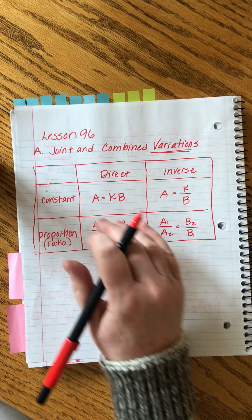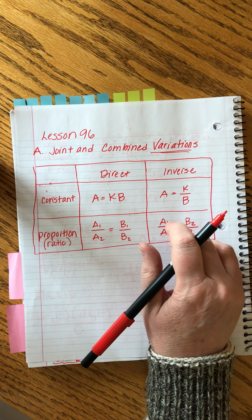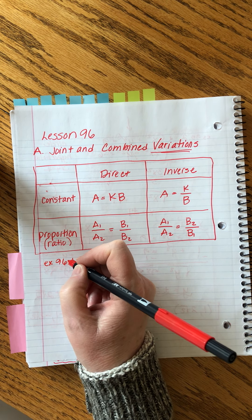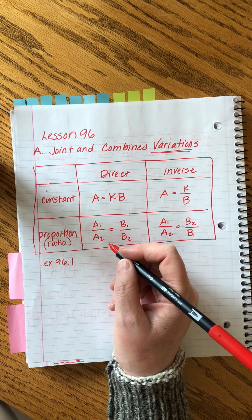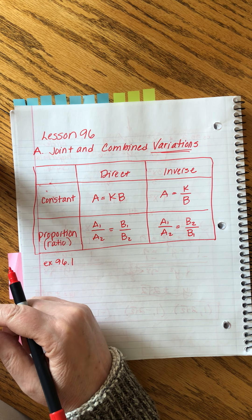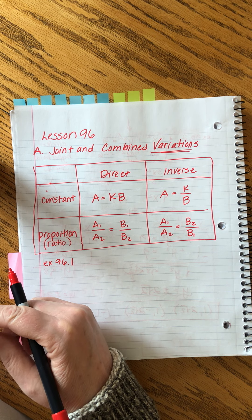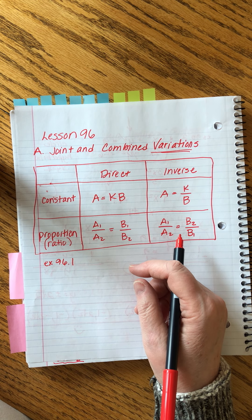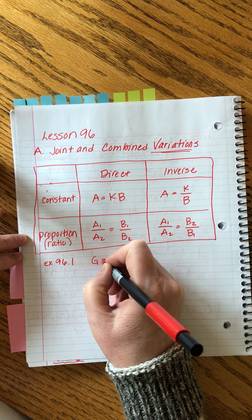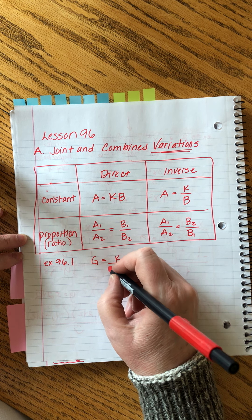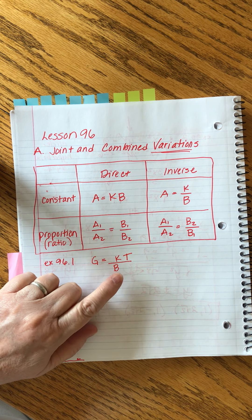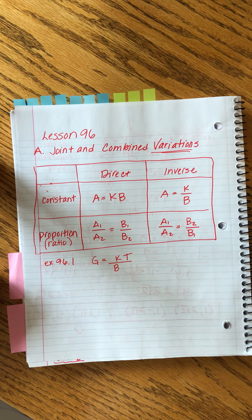I see pros and cons to both methods, so I don't highly recommend one over the other. Using the constant method: the number of apples is directly related to the number of bananas, or inversely related. Using the proportion method: a1 over a2 equals b1 over b2, and for the inverse version you flip the b's.